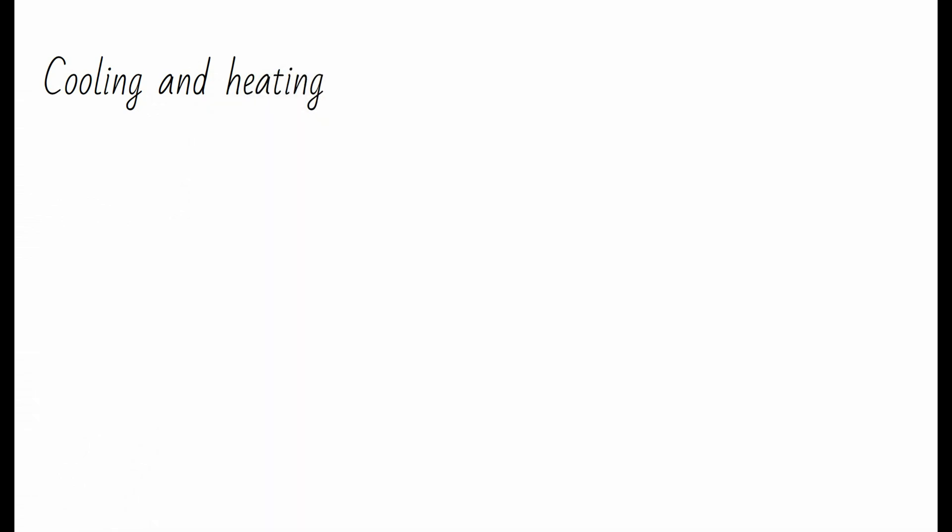In hot climates or during the summer months, thermal chimneys promote cooling by drawing warm air out of the building's interior and exhausting it to the exterior through the chimney. This creates a suction effect that pulls cooler air from the building's interior into the base of the chimney, facilitating airflow and natural ventilation.